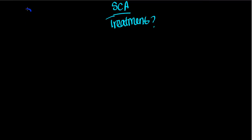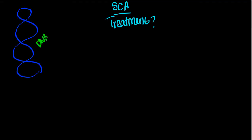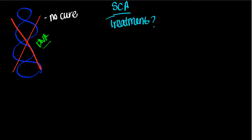First things first — let's remember what causes the disease, because in order to know how to treat something, we need to know what the cause is. This image of DNA should be a reminder that sickle cell anemia is genetic. As a result, there is no cure. We cannot change DNA genes, so there's no cure for sickle cell anemia.